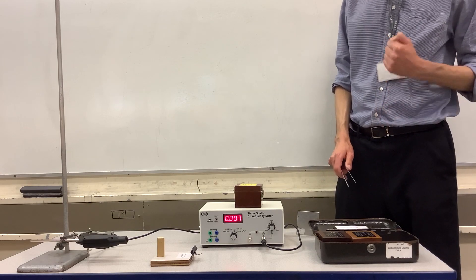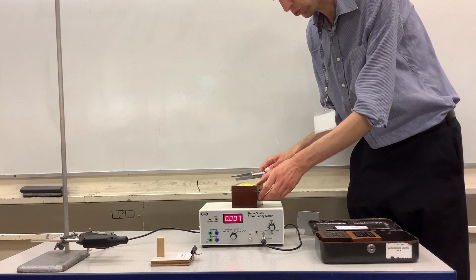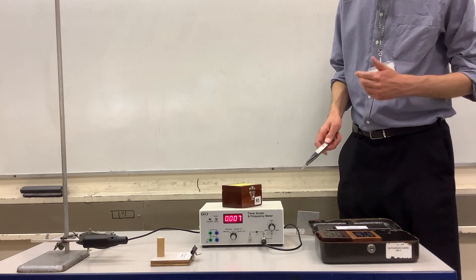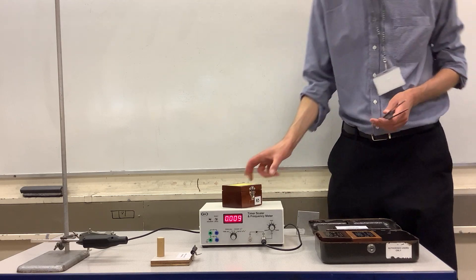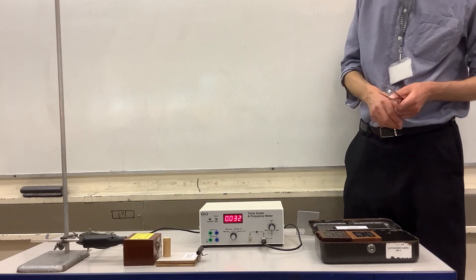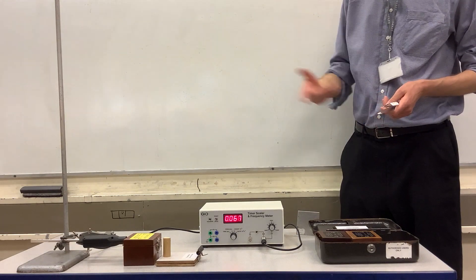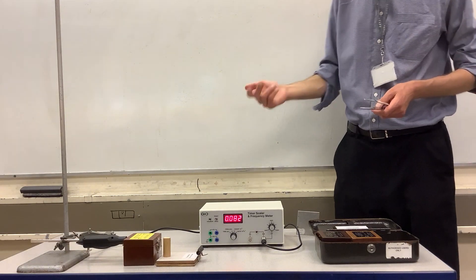The final kind of radiation we're going to look at is gamma radiation, and for that we're using the school's cobalt-60 source. This is stored in a lead-lined box, and without taking it out of the box, we can see that gamma radiation has very high penetrating power because the Geiger-Müller tube is detecting the radiation even though the source is inside the box.